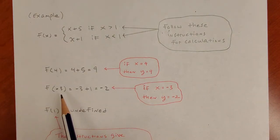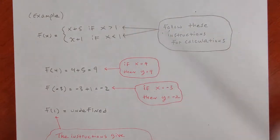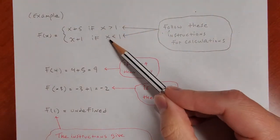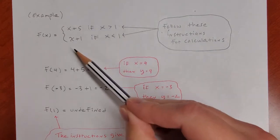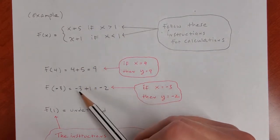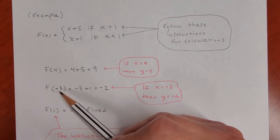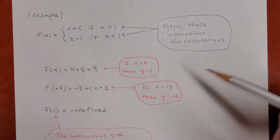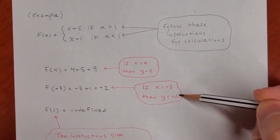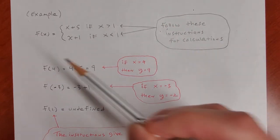What about f(-3)? Which condition does negative 3 fall under — is negative 3 bigger than 1 or less than 1? Negative 3 is less than 1, so we use x plus 1 to calculate f(-3), and we get negative 2. When x is negative 3, y is negative 2, all according to the instructions.